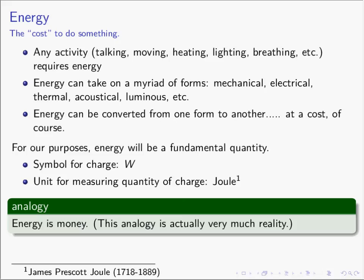Energy can take on a lot of different forms: mechanical energy, electrical energy, thermal energy, acoustical energy, luminous energy. There is really only one energy in the world — these are just different forms energy takes. Energy is a wonderful chameleon. We can convert energy from one form to another: mechanical to electrical, electrical to thermal. When you convert energy from one form to the other, there is in general going to be a loss, so energy will be expended in order to make that conversion.